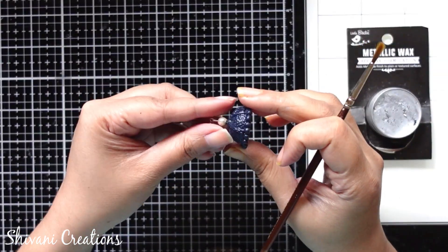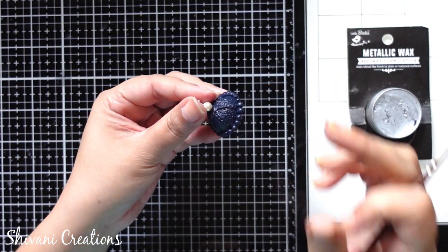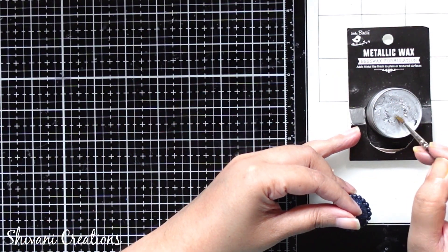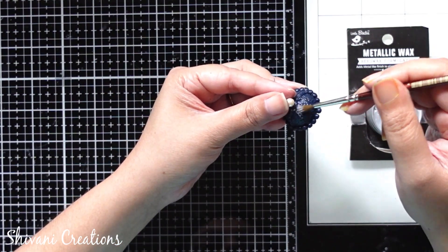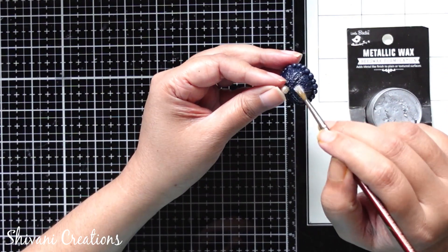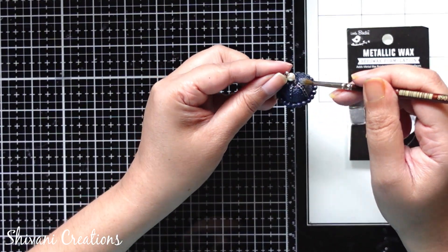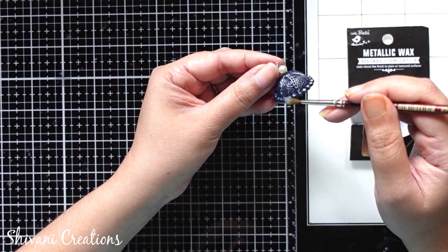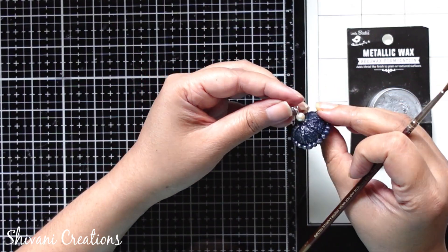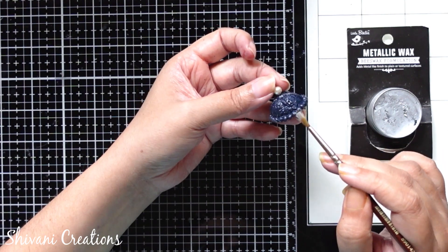Then taking back the jumka, and to give a little highlights to this I am taking metallic wax in silver color by Little Birdie. Taking a little wax on the brush and just applying it with very light hand on the jumka. So all the raised parts will get colored with this silver shade and it will enhance the beauty of all the work which we have done on the clay.